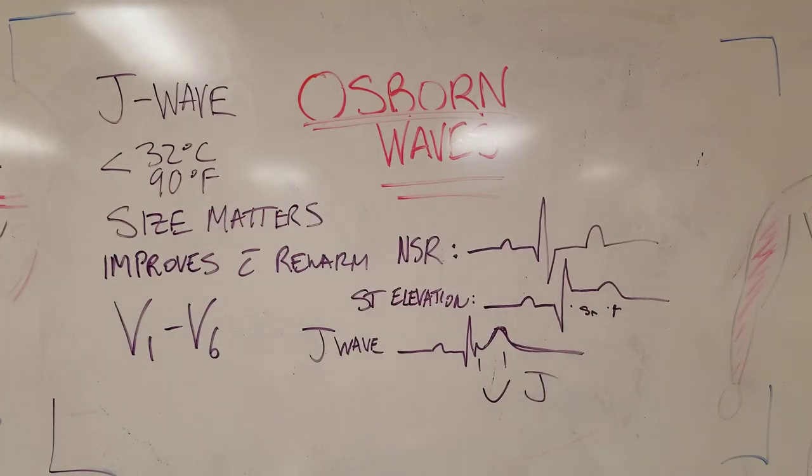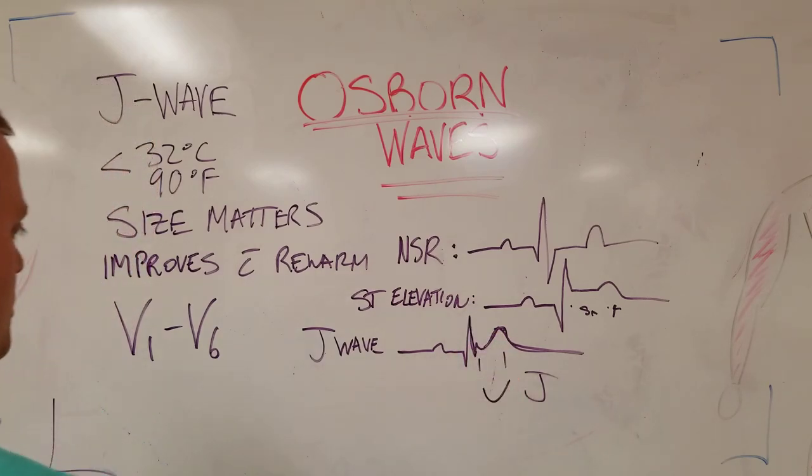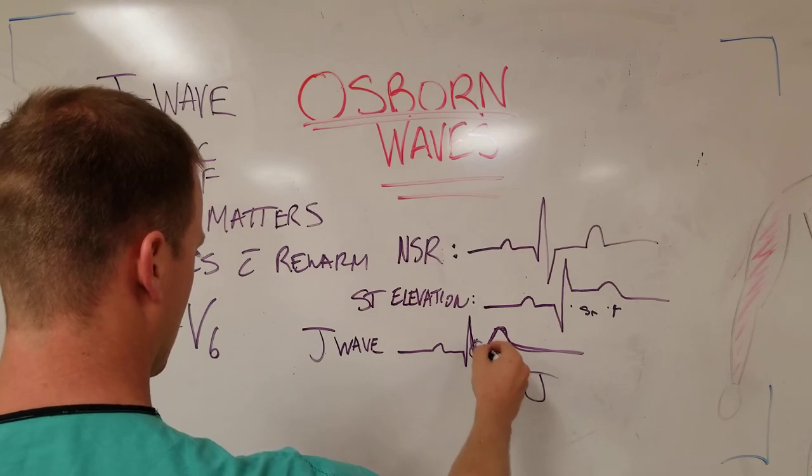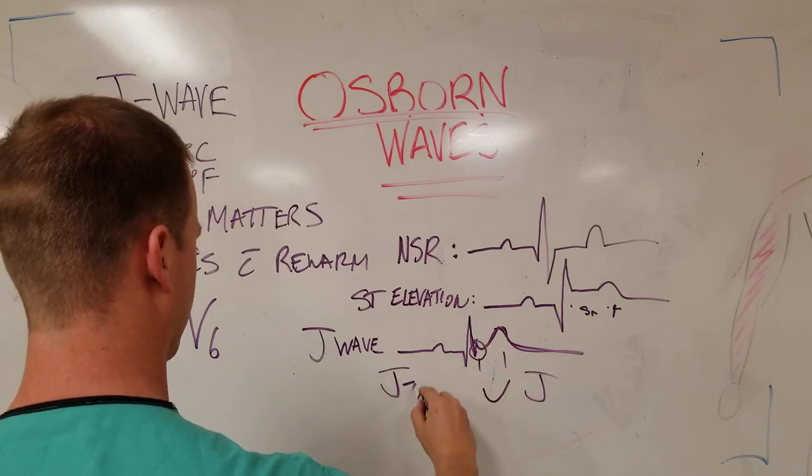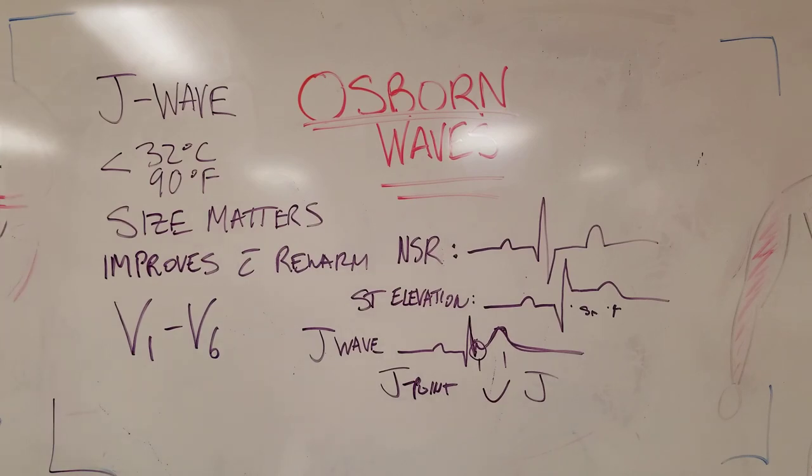Osborne for the name, J for the shape. This return down with early repolarization can be called the J point. The degree of J point, the size, is important, like I talked about earlier, correlates with the degree of hypothermia.